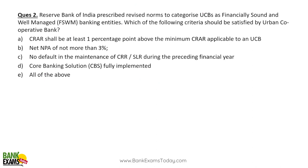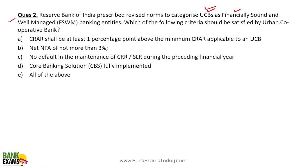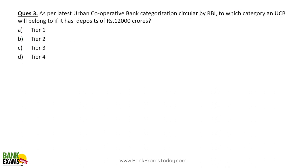RBI prescribed revised norms to categorize urban cooperative banks. For an urban cooperative bank to be categorized as Financially Sound and Well Managed: CRAR should be at least one percentage point above the minimum CRAR applicable; NPA should not be more than 3%; no default in maintenance of CRR or SLR; Core Banking Solution (CBS) should be fully implemented; and no penalty should have been imposed by RBI. Please read the full circular for complete details.